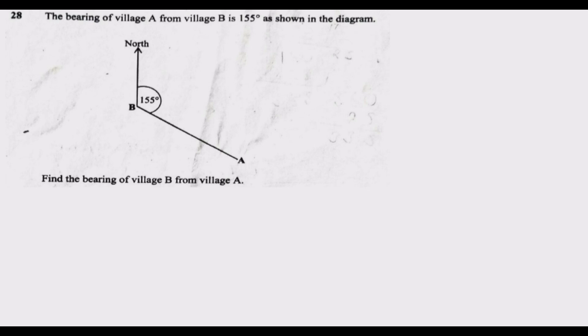Now let's take a step and study the diagram. We can see the north line there, we can see the bearing, we can see village B and village A.